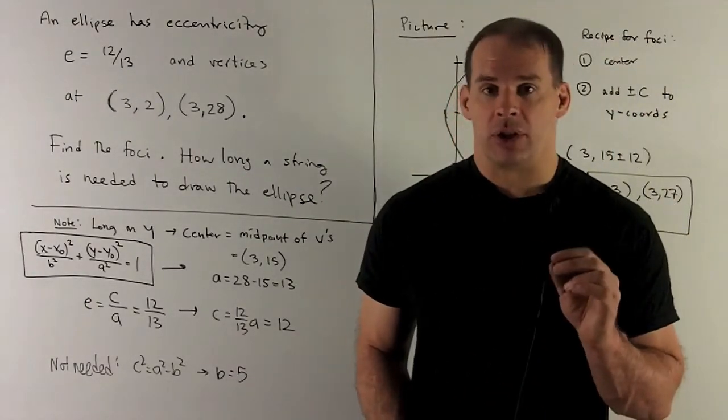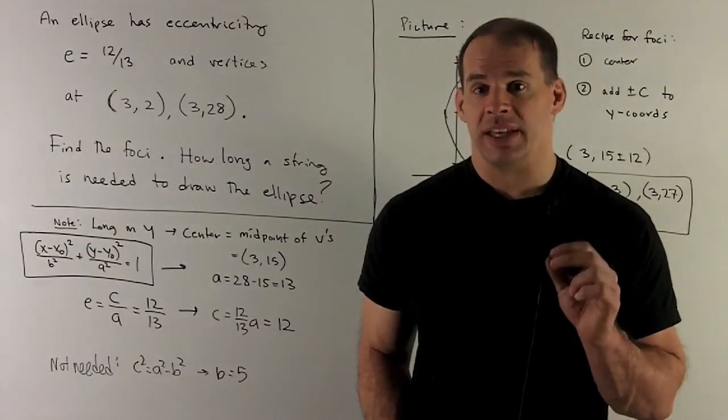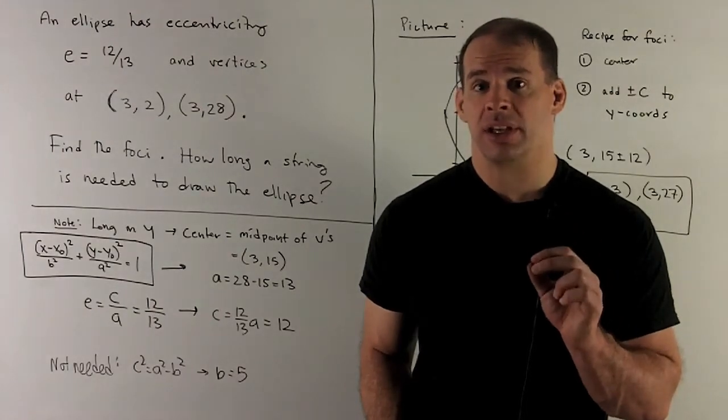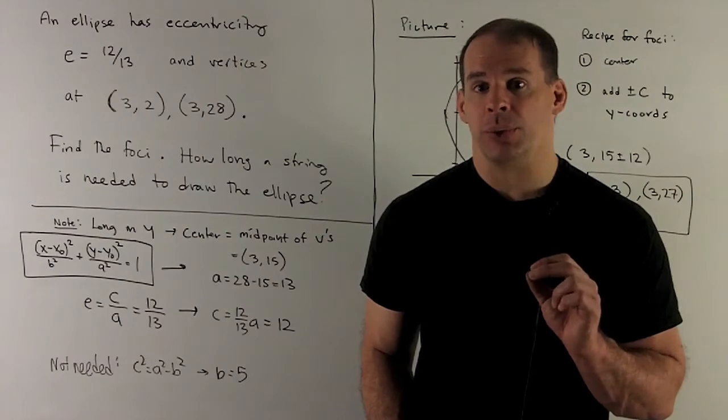Now, if we take a look at the distance between our vertices, that's going to be the length of the major axis. In this case, that's going to be 26. So I go to the standard equation of the ellipse, a is going to be equal to 13.